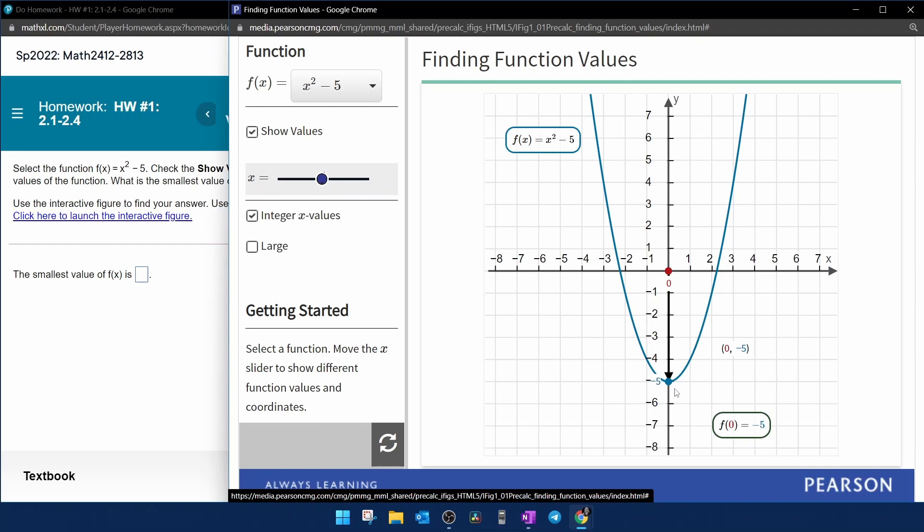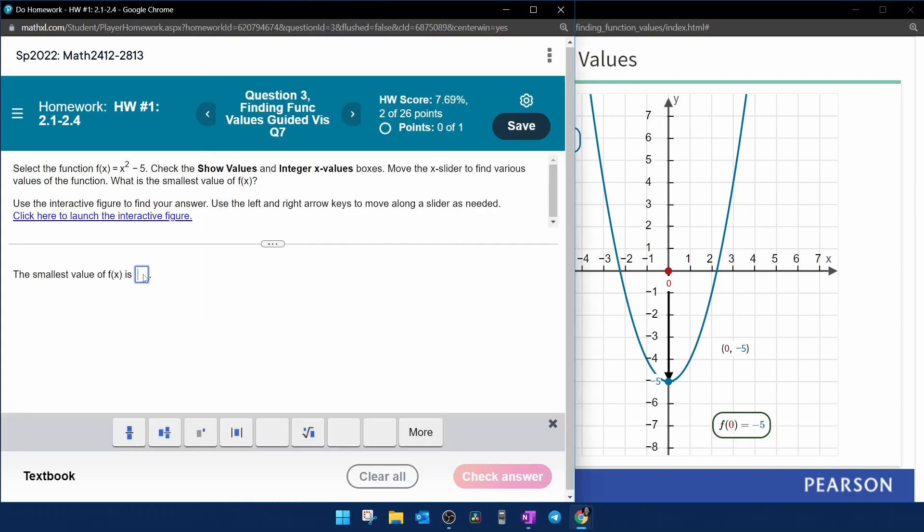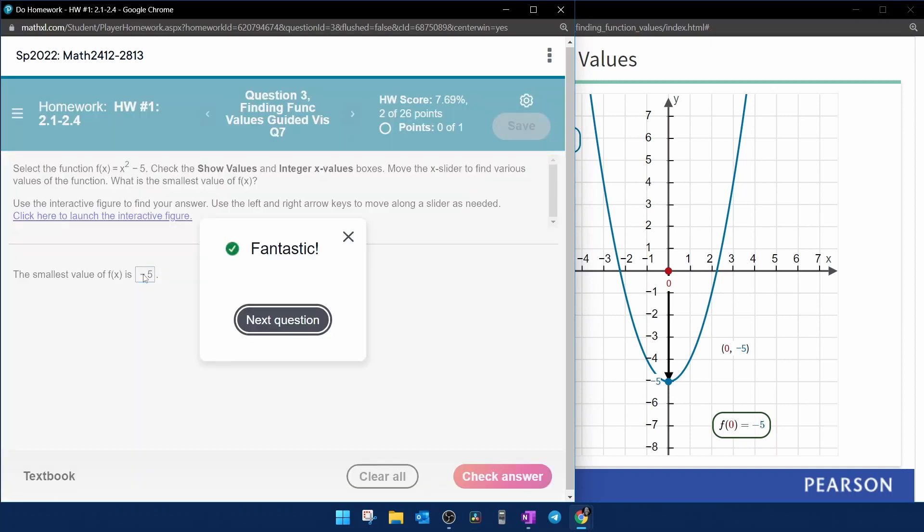And the smallest y value on this graph is negative five. And it does say the smallest value of f(x) is. So you want to make sure that you answer the correct question here. The smallest value of f(x) occurs when x is zero. We can see that here in the ordered pair. When x is zero, y is negative five. But it wants the smallest value of f(x). And so the answer for this problem would be negative five, since they want the y value.